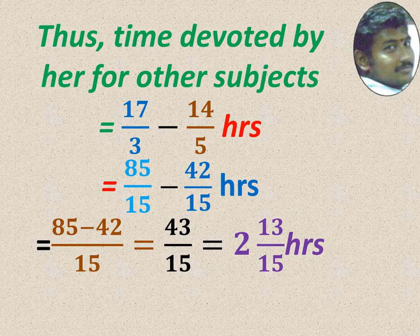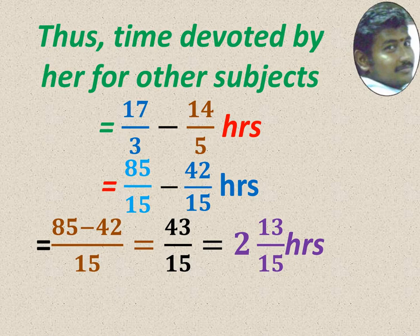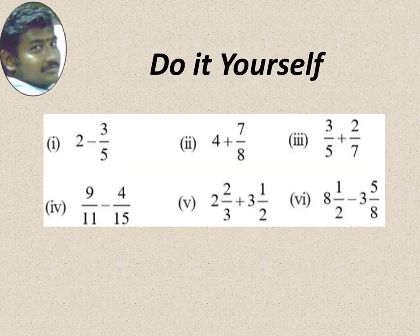Take the common denominator 15. Subtract only the numerator. 85 minus 42 is equal to 43, 43 by 15. Now we can make it into mixed. So 15, 2 times is 30, remainder is 13. So 2 13 by 15 is the answer.